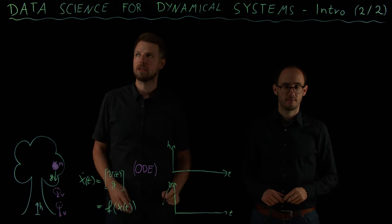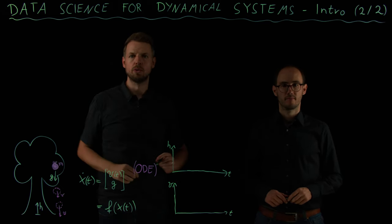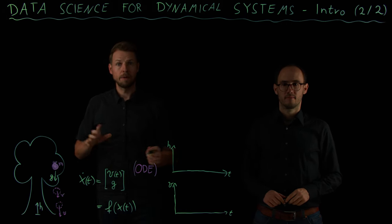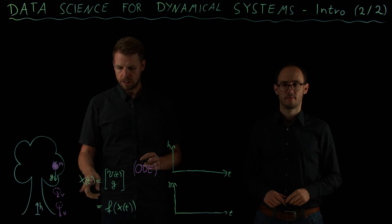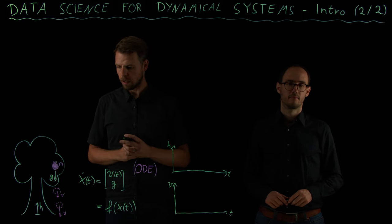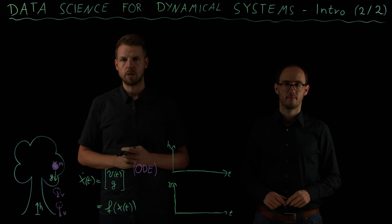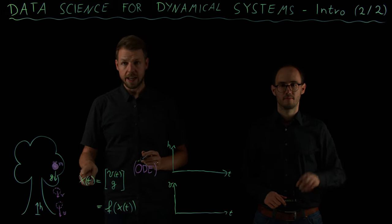Hello everyone and welcome to part 2 of our introductory video to this lecture series on data science for dynamical systems. In part 1 we learned about dynamical systems and how they are described mathematically. We started with an ordinary differential equation ODE which means that we have a system state x which is time dependent.